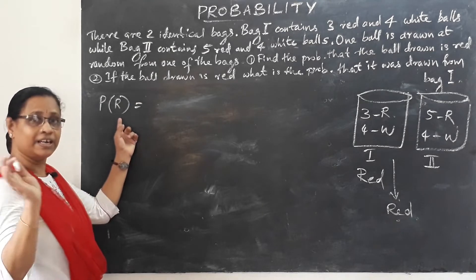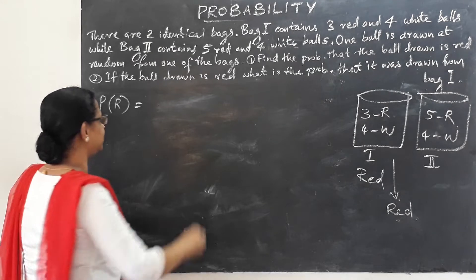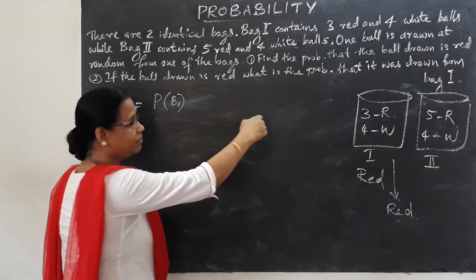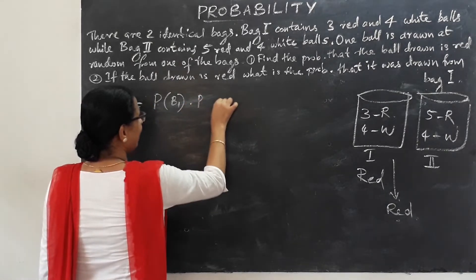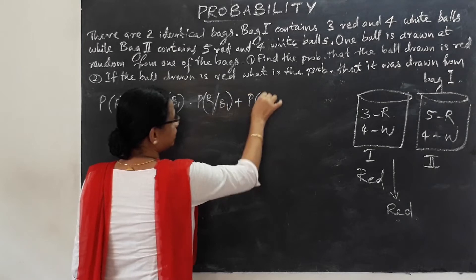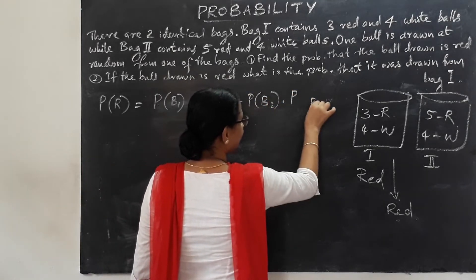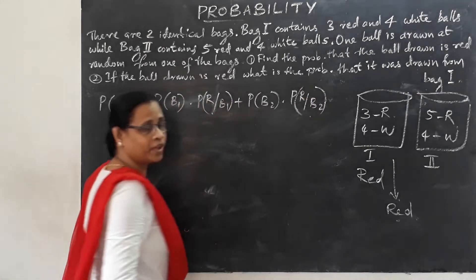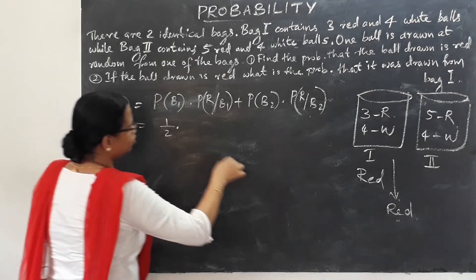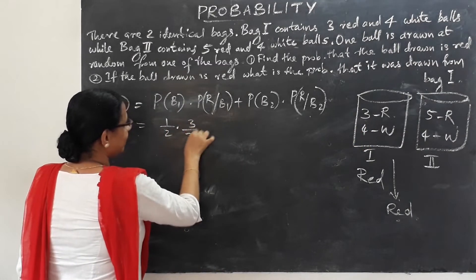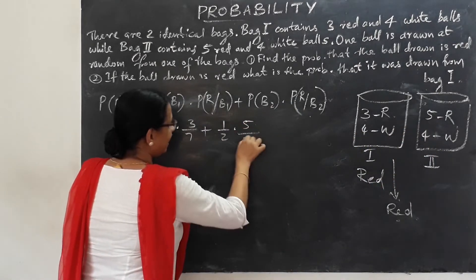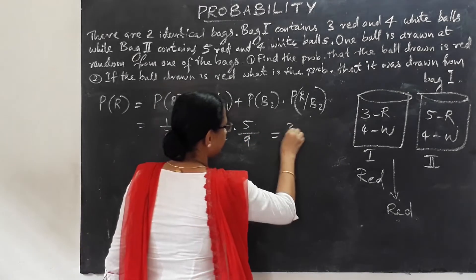Using the Theorem of Total Probability, the probability of a red ball is: probability of bag 1 times probability of red given bag 1, plus probability of bag 2 times probability of red given bag 2. That is 1/2 into 3/7, plus 1/2 into 5/9, which equals 31/63.